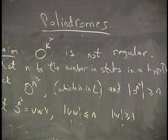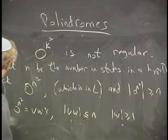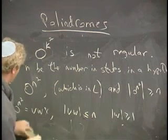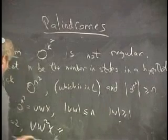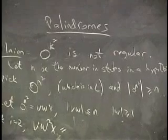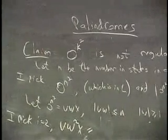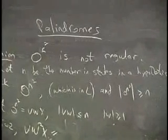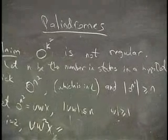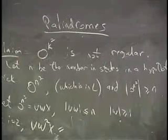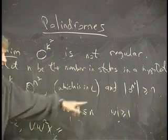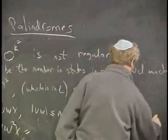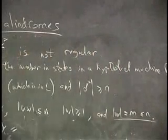And now we have to pick an i and pump it up. We're going to get lucky and i equals 2 is going to work again. I'm going to write I pick instead of let. I pick i equals 2, vw²x equals—tell me what it equals. If I pump up w twice, then how many zeros are in that thing? It would be nice to know how many zeros were in w, right? So let 0 to the n squared equal vwx where these things are true, and let the size of w equal m, strictly less than or equal to n. Just so it has a name. The number of zeros in w is m.